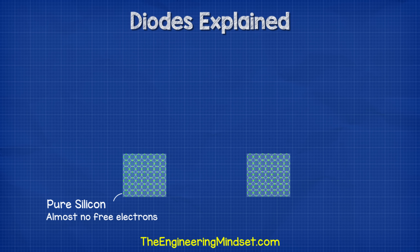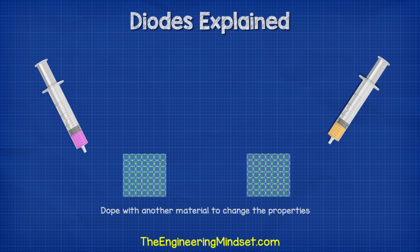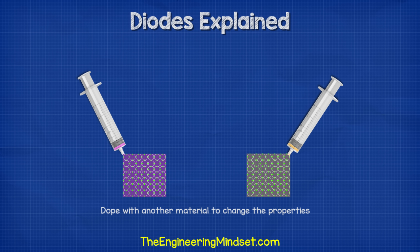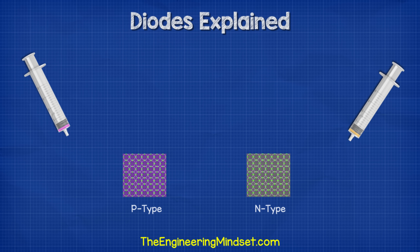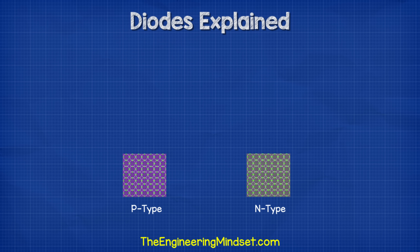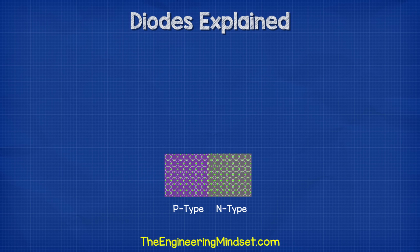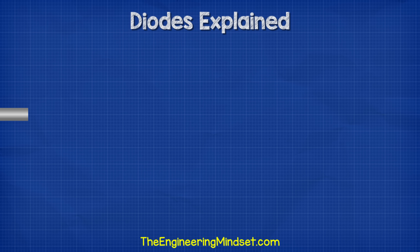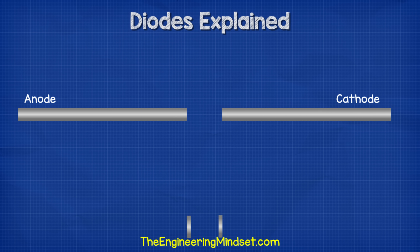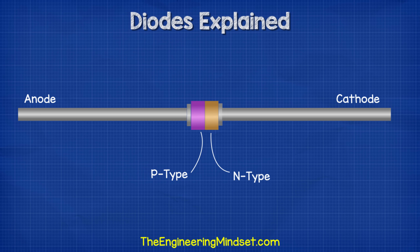Pure silicon has almost no free electrons, so what engineers do is dope the silicon with a small amount of another material to change its electrical properties. We call this p-type and n-type doping. We combine these doped materials to form the diode. Inside the diode we have two leads — the anode and cathode — which connect to thin plates. Between these plates there is a layer of p-type doped silicon on the anode side and n-type doped silicon on the cathode side.